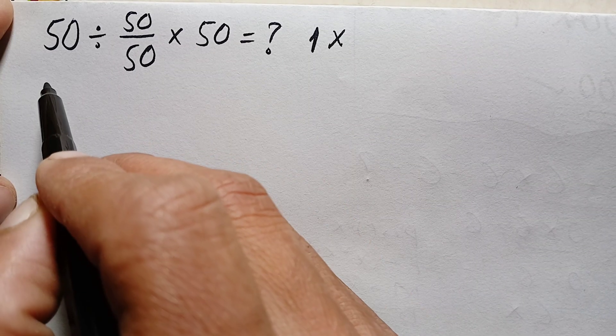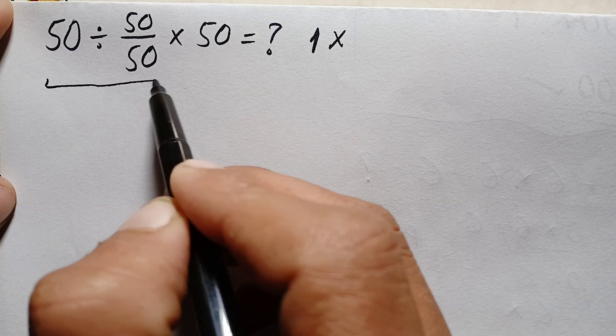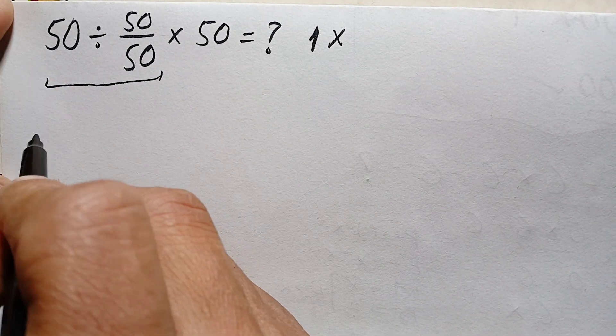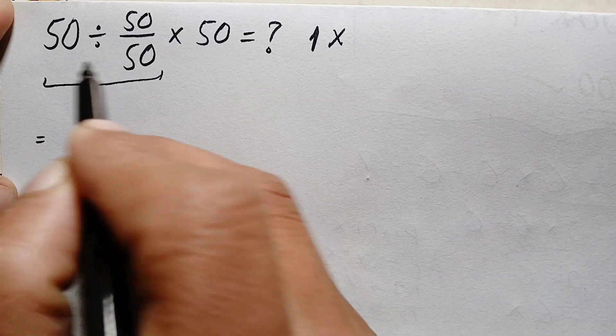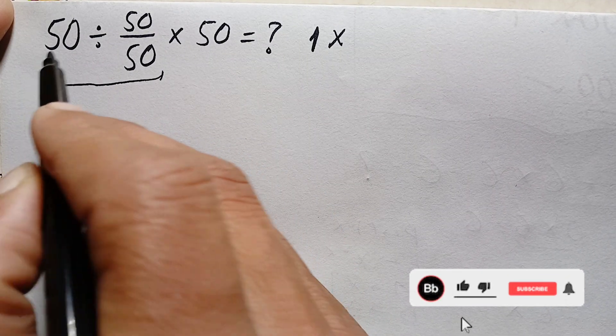So first we will divide this 50 by this fraction. To divide 50 by this fraction, here we will apply the KCF rule, and by KCF we have...